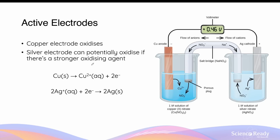In the first video on galvanic cells, we explored the galvanic cell comprised of a copper and silver electrode. In this example, the copper electrode underwent oxidation to form copper ions by losing two electrons, and the silver electrode was involved as it was a product of reduction of silver ions. In both cases, these are classified as active electrodes as they are involved in oxidation and reduction.